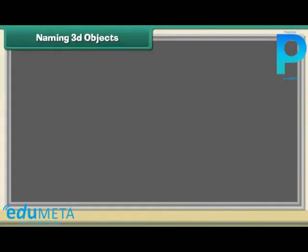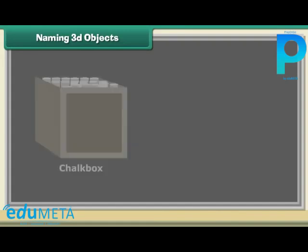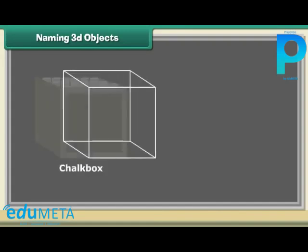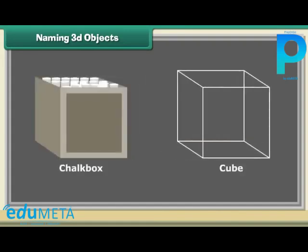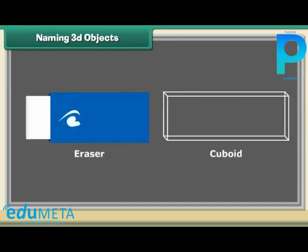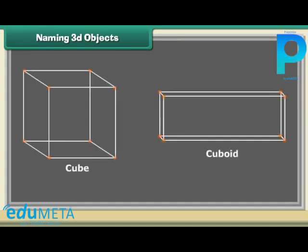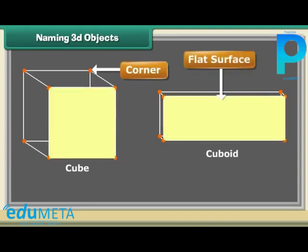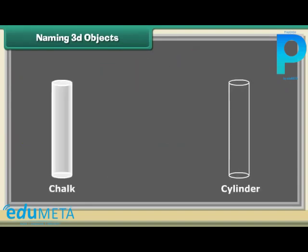Naming 3D objects: let us now give names to the solid shapes. A chalk box is a cube. An eraser is a cuboid. Both cube and cuboid have corners and flat surfaces.